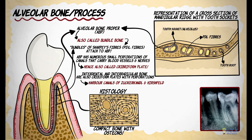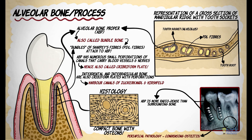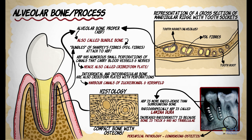In radiographs, the alveolar bone proper is more radiodense than the surrounding bone and can be seen as a thin radiopaque bone surrounding the roots of the teeth. Radiographically, the alveolar bone proper is called lamina dura, and its increased radiodensity is not due to high mineral content but because the bone is thick and does not have trabeculations.